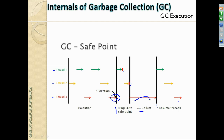From the user perspective, the application stops responding for some time depending on how fast GC collection completes. This is the stop-the-world GC scenario — mark, sweep, and compact all execute together in one stitch, the application is completely halted, and once GC is done, the application resumes. This is one of the biggest drawbacks of GC.